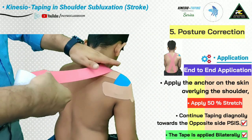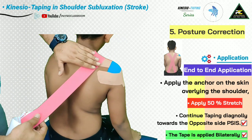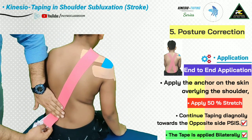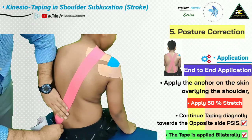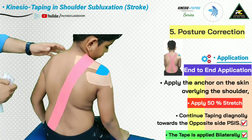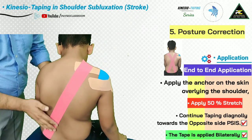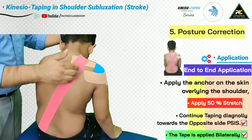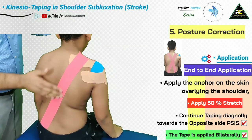Stabilize the first anchor, remove the paper backing while keeping the last portion, then ask the patient to sit straight. Apply around 50 percent stretch, and the remaining part is applied with no tension. Whenever the patient tries to go into a hyperkyphotic posture, the tape stretches and stimulates the mechanoreceptors in the skin, which sends a signal to the brain to reduce this tension — so the patient learns to sit in a position where the tape has less tension.